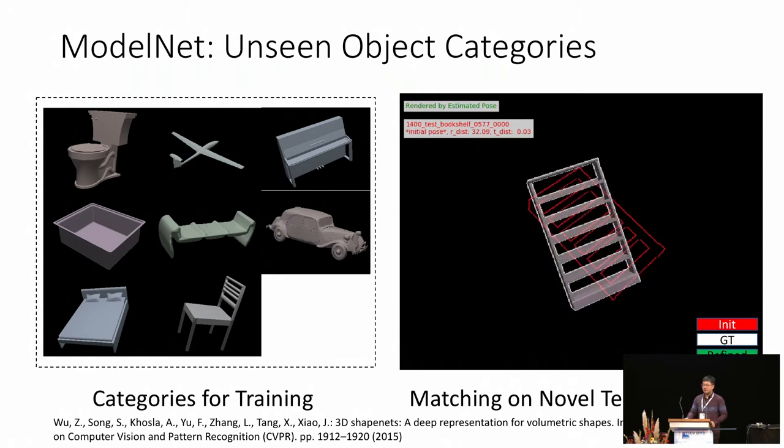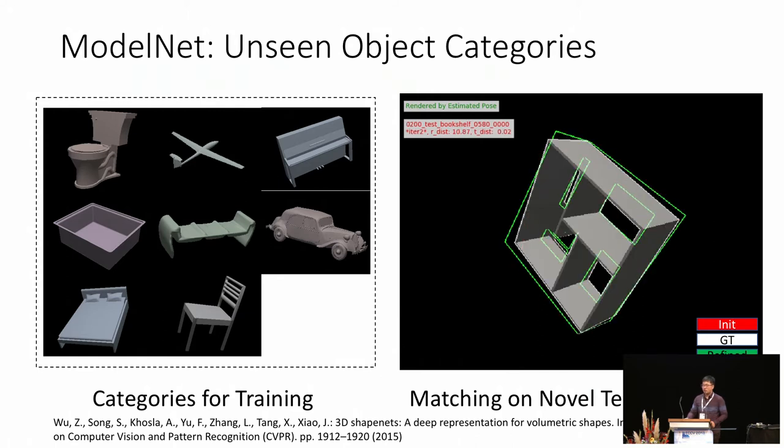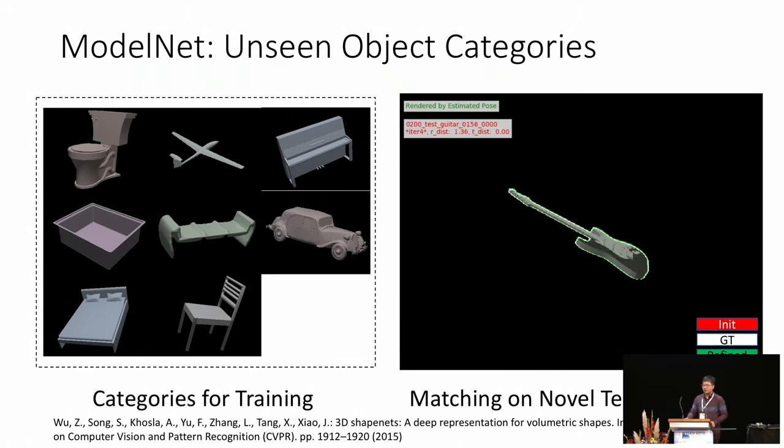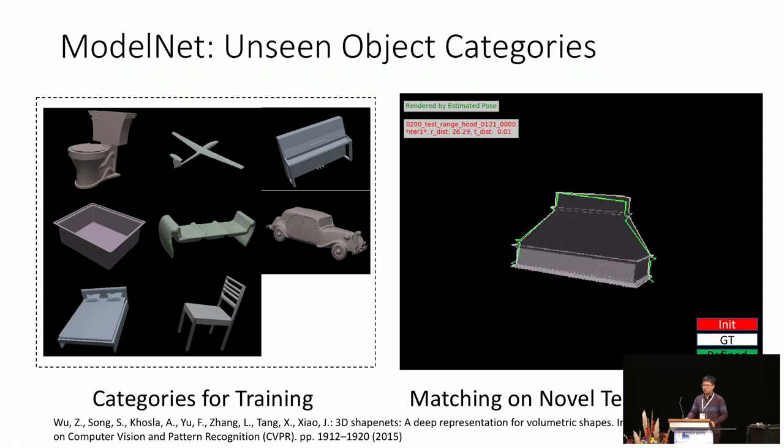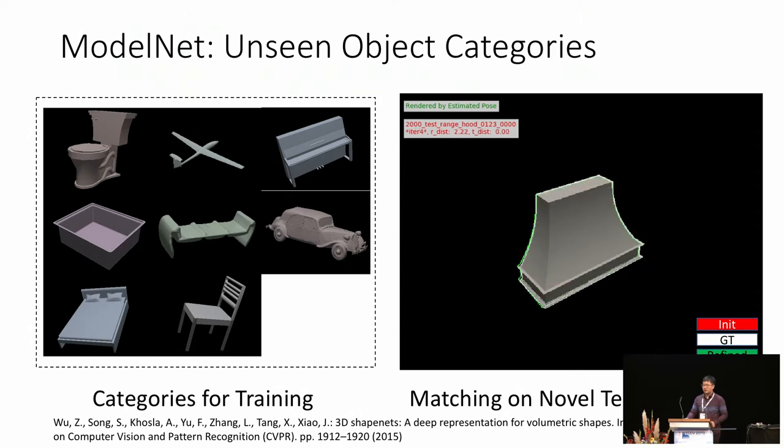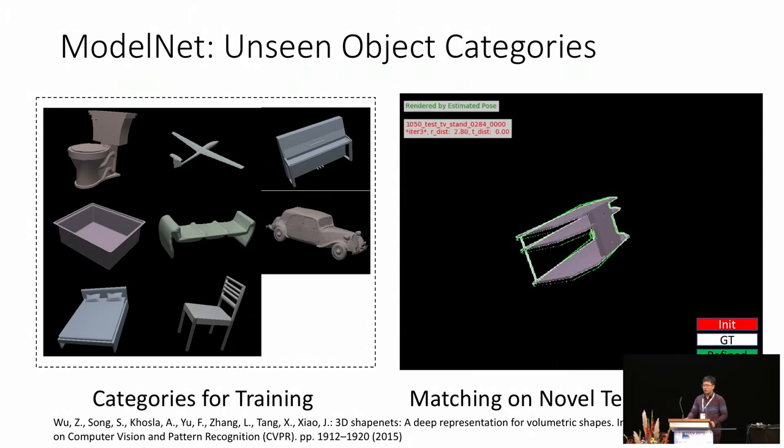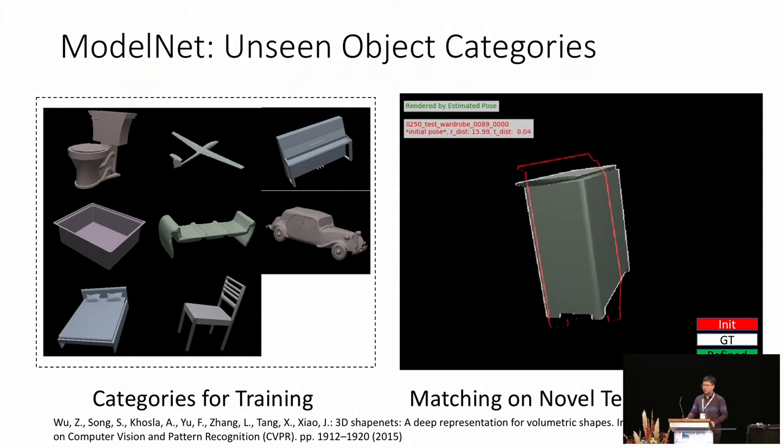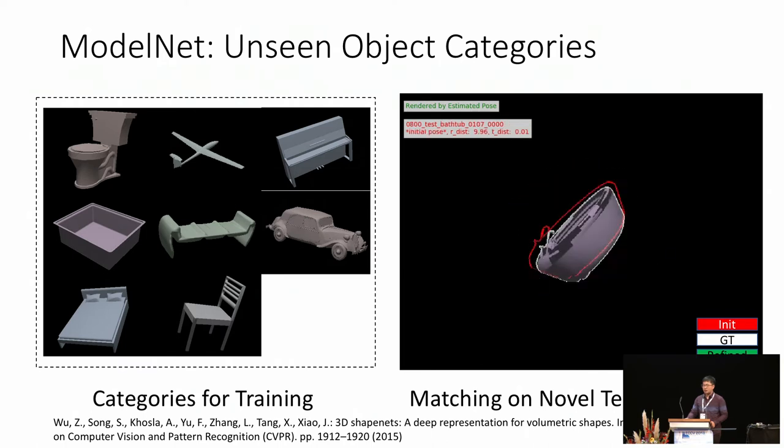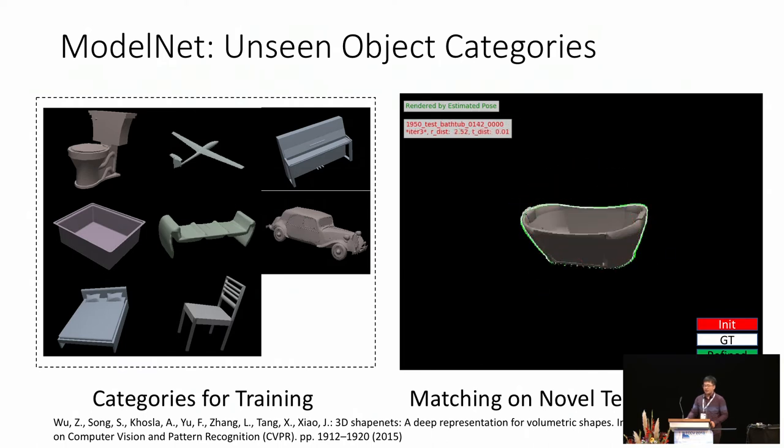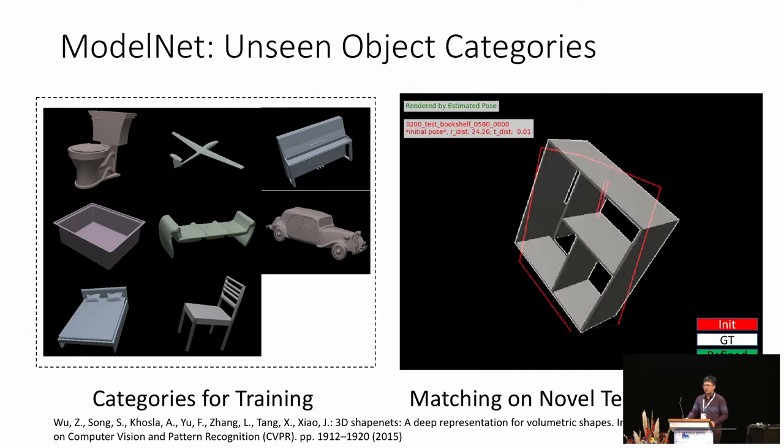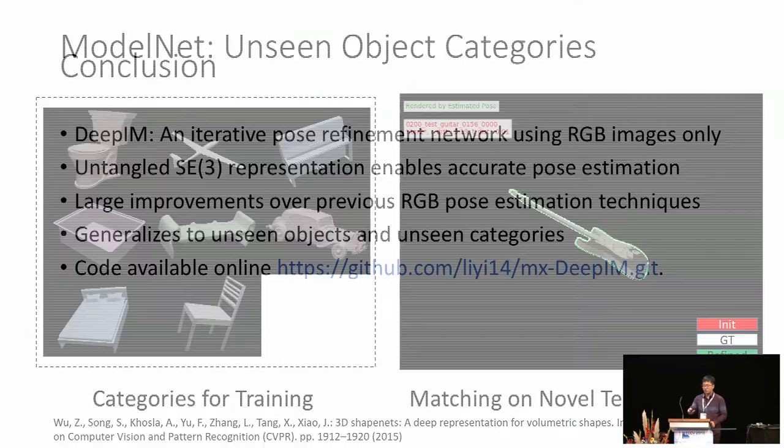Furthermore, we tested our network on unseen object categories, which means the model categories we used for testing are not included in training. We trained our network using models from eight categories from ModelNet, and tested our network on another seven categories from ModelNet. Again, none of the categories used for testing is included during training.